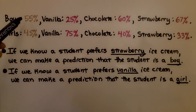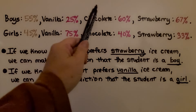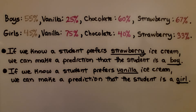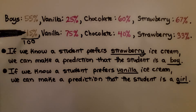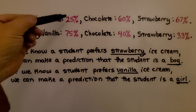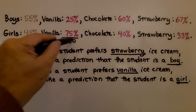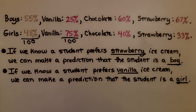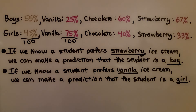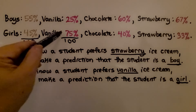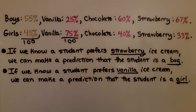We know boys were 55% of all surveyed, with vanilla at 25%, chocolate at 60%, and strawberry at 67%. We can infer the girls' percentages because the totals must equal 100%. So girls are 45%, girls' vanilla preference is 75%, and their chocolate and strawberry values follow the same logic. If we know a student prefers strawberry, we can predict the student is a boy — it's higher for boys. And if we know a student prefers vanilla, we can predict the student is a girl — vanilla is 75% for girls and only 25% for boys.